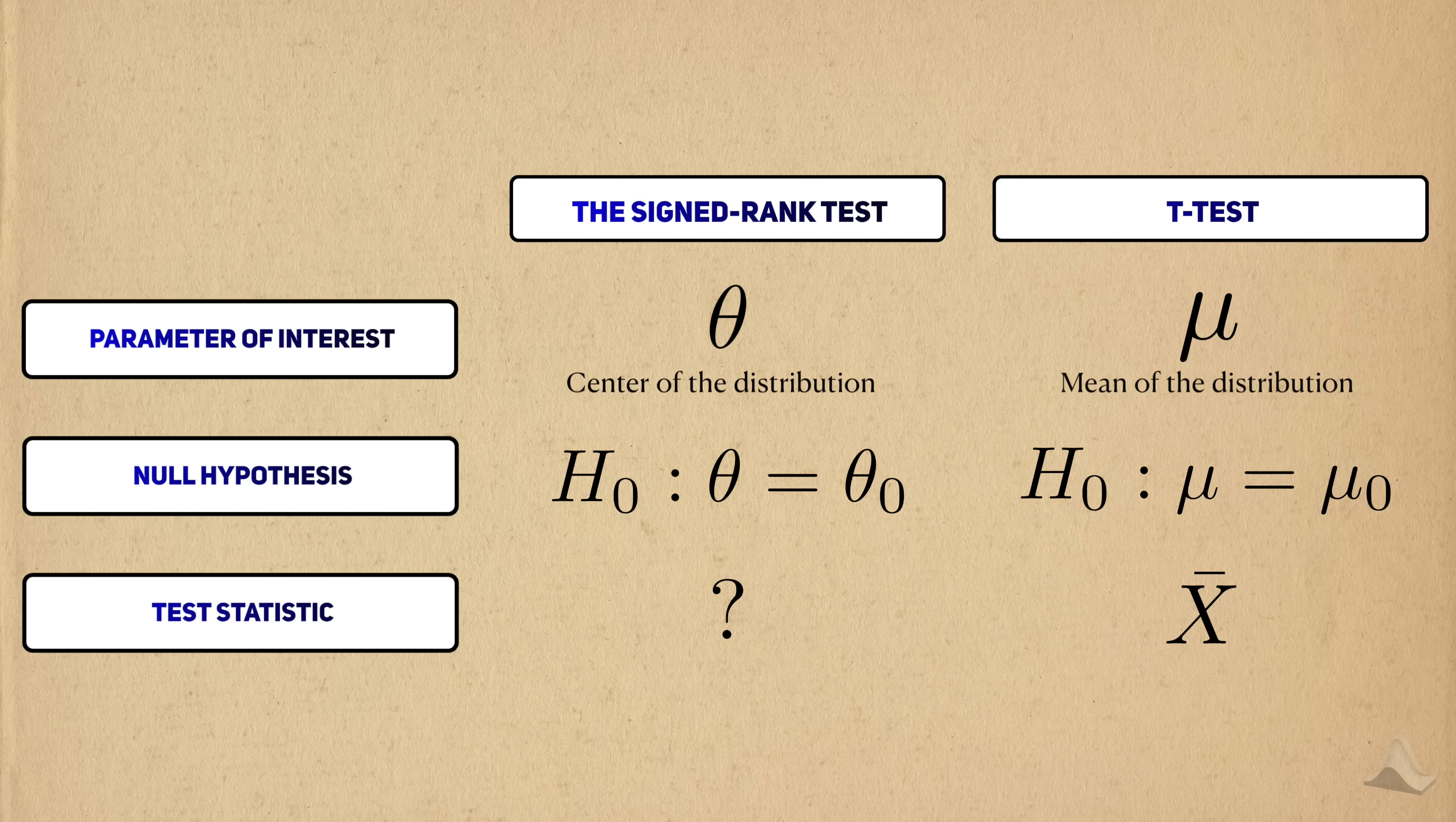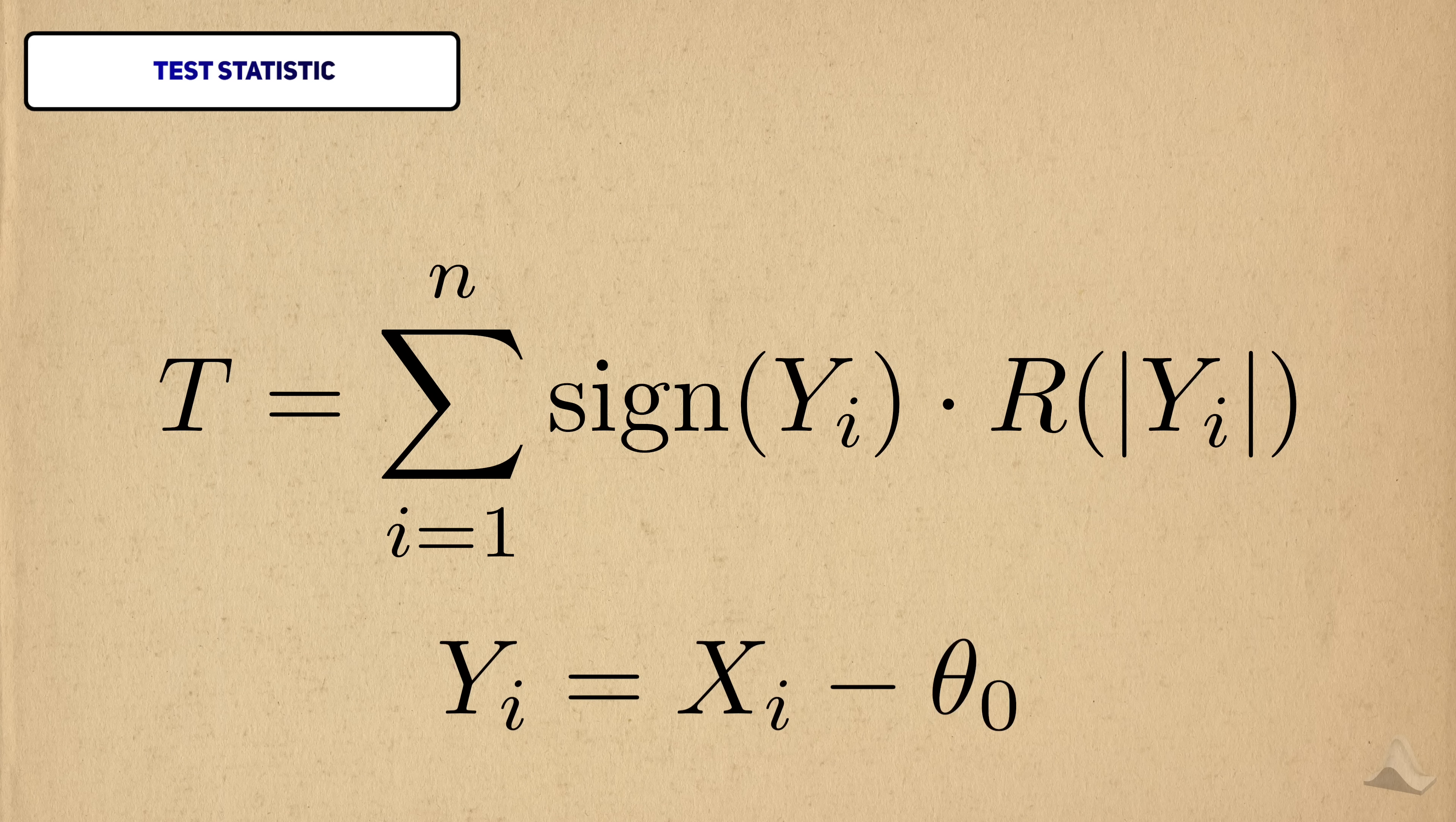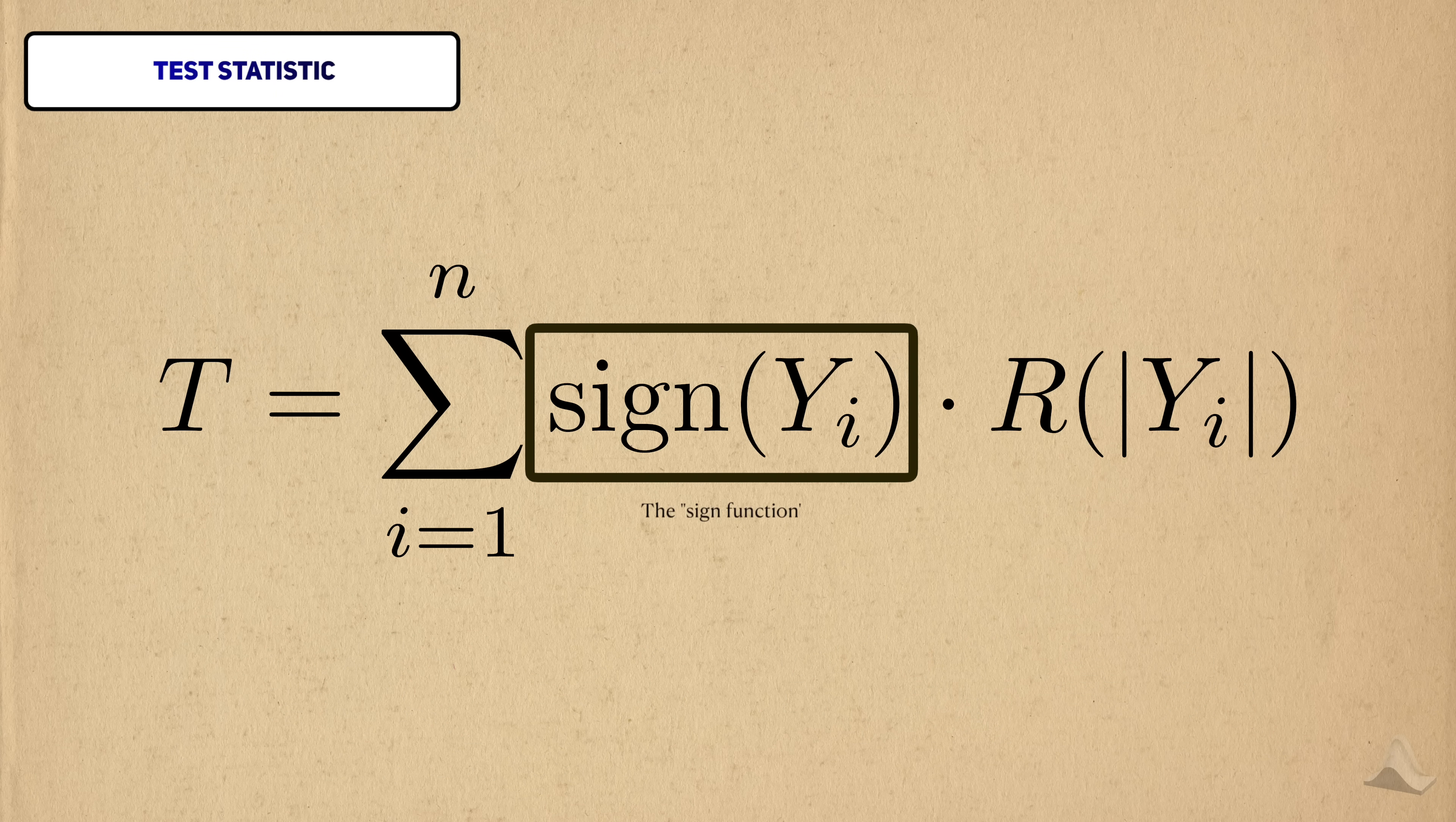But things start to look very different once we start to look at the test statistic. And this is what it looks like. The first thing you should notice is that the notation for the data is slightly different. I wrote the original data as a set of x's. But here, there are y's. These y's represent transformed versions of the original data. More specifically, they're the original data points centered by theta naught. Under the null hypothesis, the center of these y's would be zero. The center of the original data would be theta naught. This function here is called the sign function. It spits out a negative one if the transformed observation is less than zero, and positive one if it's greater than zero.